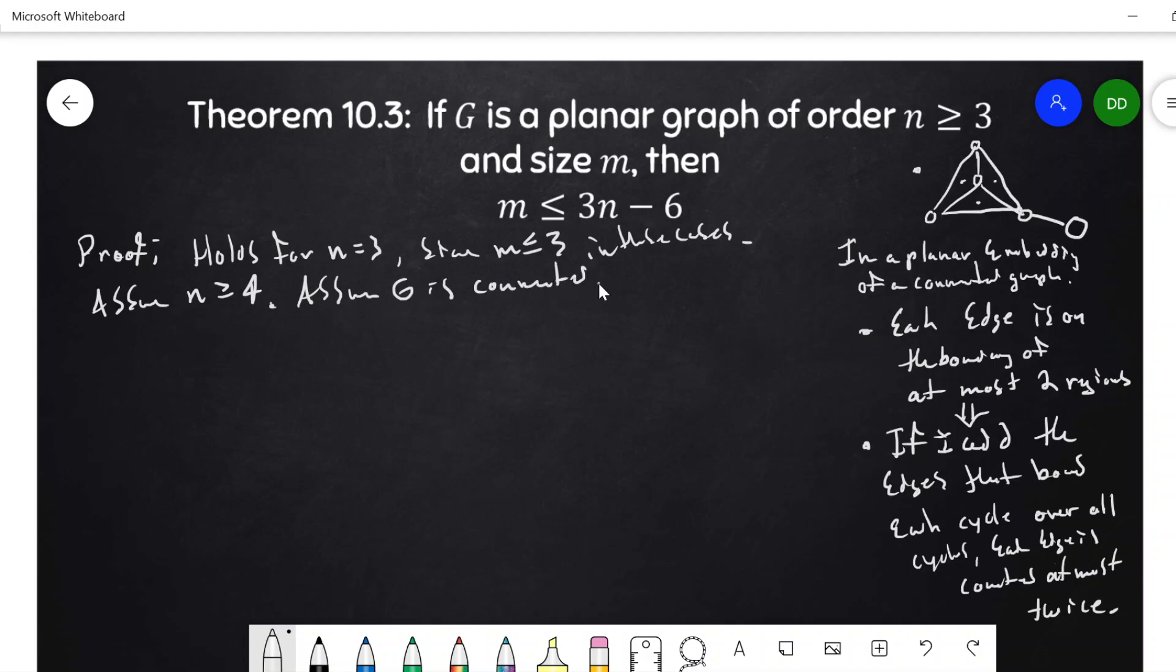Because if it's not connected, that means I can add edges in without any danger of crossing, without adding any crossings or anything like that. But if it were already planar, I can add more edges in and still it won't be planar. So I wouldn't have reached the maximum size possible.